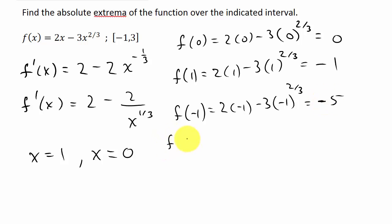And then we've got f(3), I'm doing the endpoints now. So that's 2 times 3 minus 3 times 3 to the 2/3. And this one we'd probably just have to punch into our calculator, and we would get negative 0.24 when we plug it into our calculator.